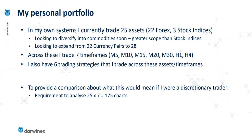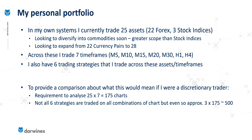So if a discretionary trader was to do the same, that's how many charts they'd have to analyse, which clearly is not going to be a possibility. But when you multiply that up across the trading strategies — I don't combine the whole combination, but if we base that on an average of three — that effectively ups this to around about 500 sets of analysis. And this is the real beauty of algorithmic trading, in that it allows you to diversify to this extent.